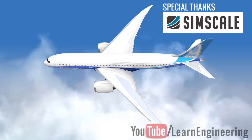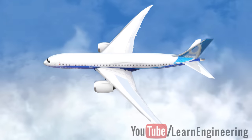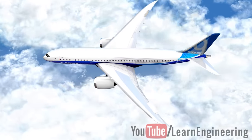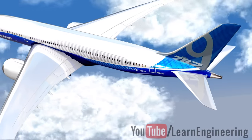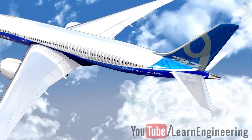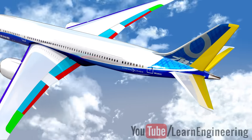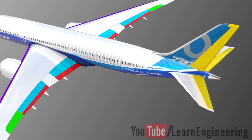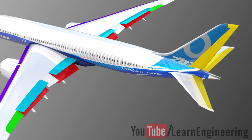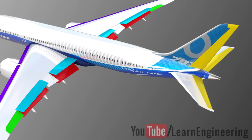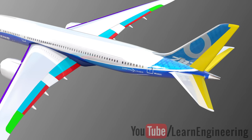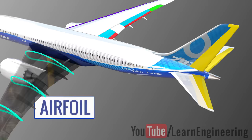First, let's have a closer look at modern airplanes' wings and tails. One interesting thing you will notice is that they are not made as a single solid piece — the wings and tails of the airplanes have many movable parts. The most fascinating thing about the whole wing and its different parts is that they form a very special shape in fluid mechanics: the airfoil shape.